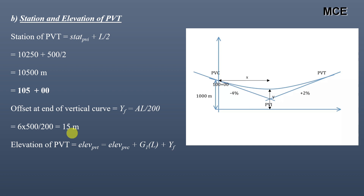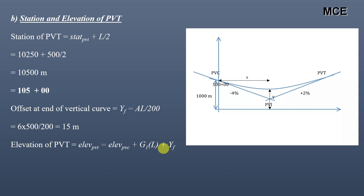The elevation of PVT equals the elevation of PVC plus g1 times L plus YF, where g1 is the initial grade and YF is the offset at the end of the vertical curve. Putting in values: elevation of PVC = 1000, g1 = −0.04, L = 500, YF = 15. This gives the elevation of PVT equal to 1000 + (−0.04 × 500) + 15 = 995 meters.